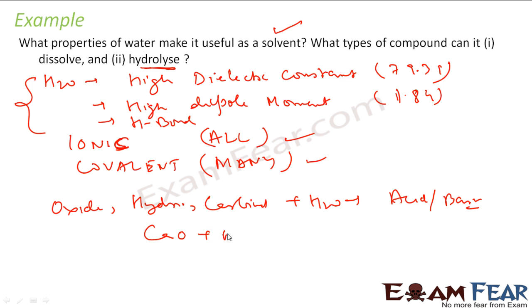So water can hydrolyze many oxides, hydrides, carbides, etc. For example, if you see CaO, if you add water, this becomes Ca(OH)2.